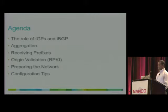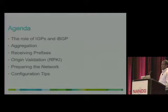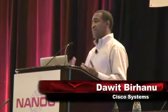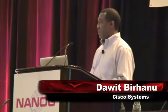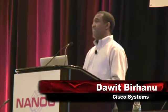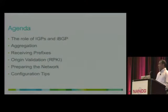After discussing the communities, we'll discuss the role of IGPs and IBGP, aggregation — which is very important for the health of the internet — receiving prefixes from peers, customers, and transit providers, origin validation or PKI for security, verifying that the prefix received is originated from an authenticated originator.